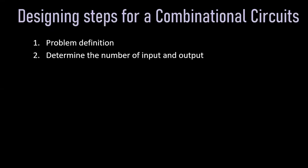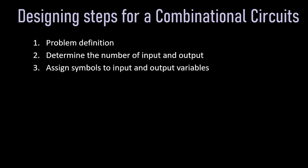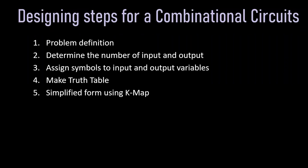We will define the number of inputs and outputs for the circuit. In the next step, we will assign symbols to the input and output variables. The inputs will be assigned letters and the output will be defined with some letters. In the next step, we will make a truth table that defines the required relationship for the given problem statement.